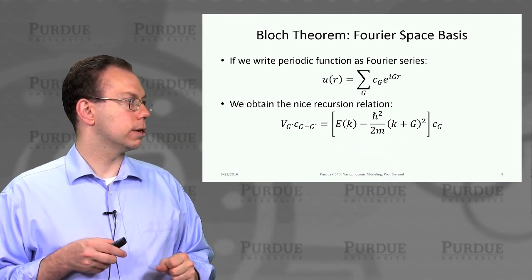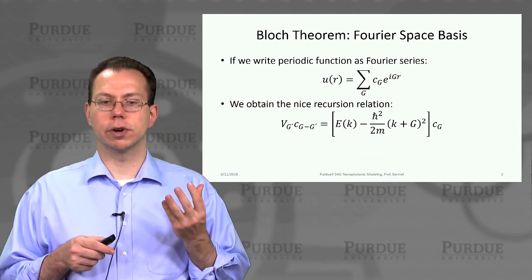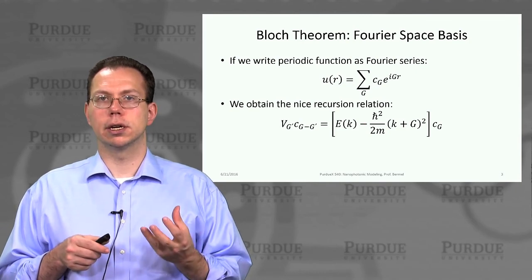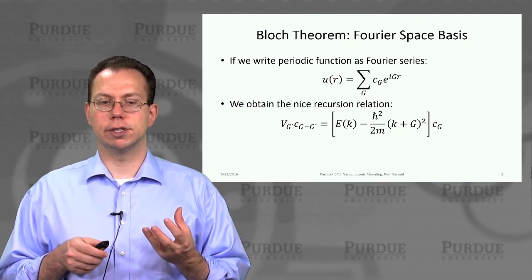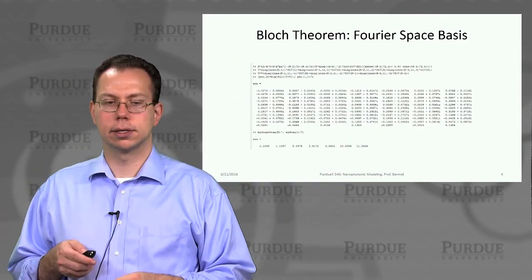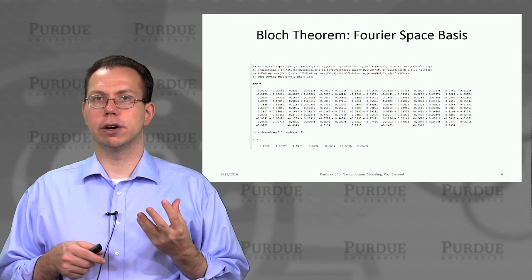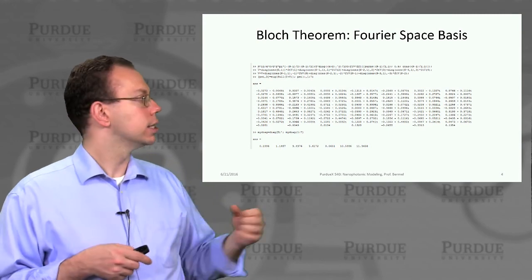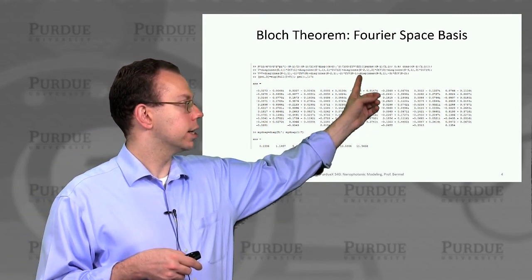e of k minus h bar squared over 2m k plus g squared times the original coefficient c of g for the periodic function. And so that harkens back to this. And then we can actually solve it numerically in MATLAB. Setting up the problem, we get something like this.